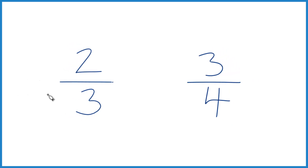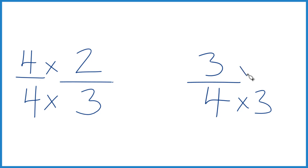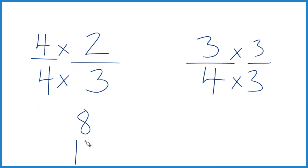So I could say three times four, that would give me twelve, and four times three, that would also give me twelve. So the denominators would be the same. But I also need to multiply the numerator here by four — that's because four over four is just one, so I'm just multiplying by one. Over here, multiply by three. And four times two is eight, four times three is twelve.